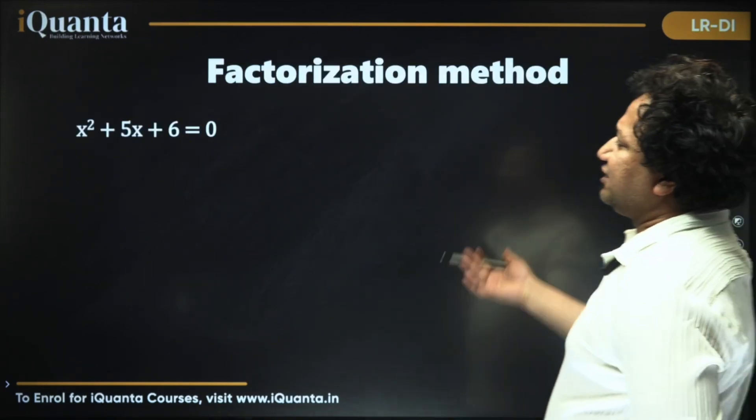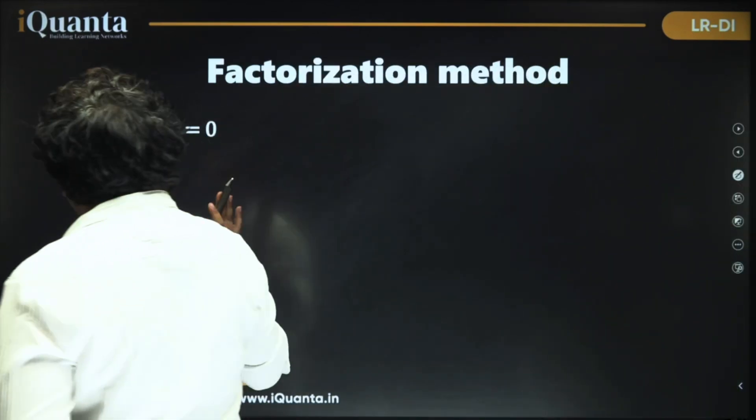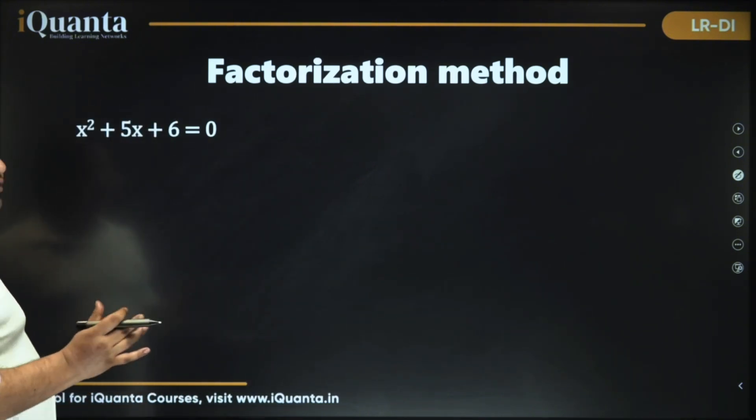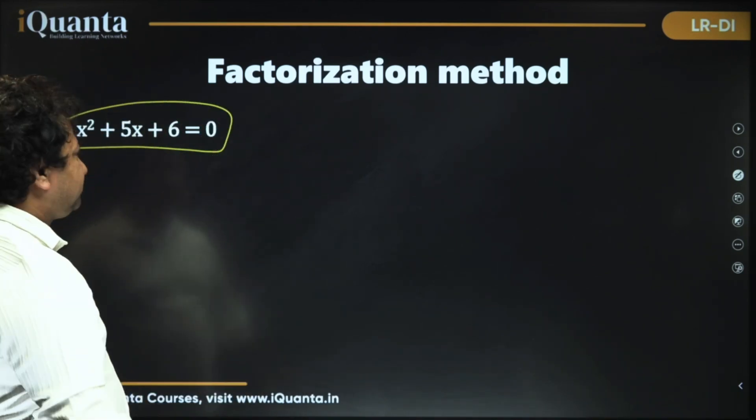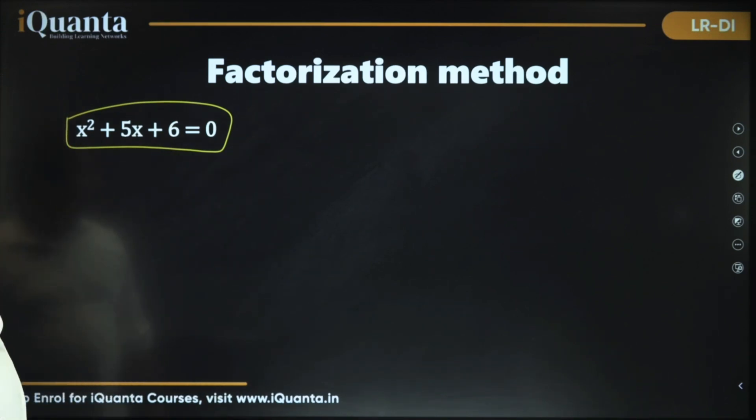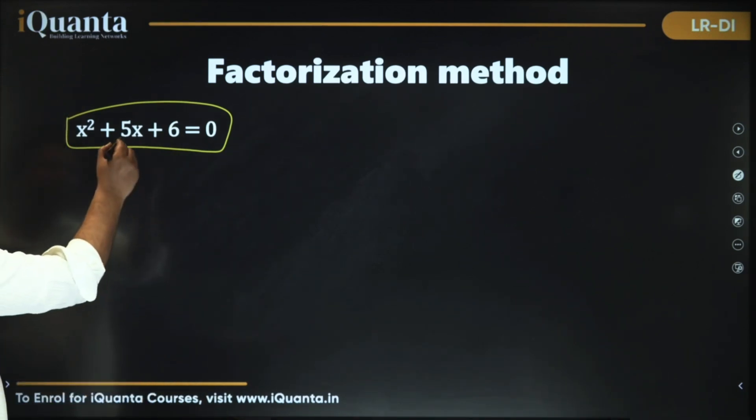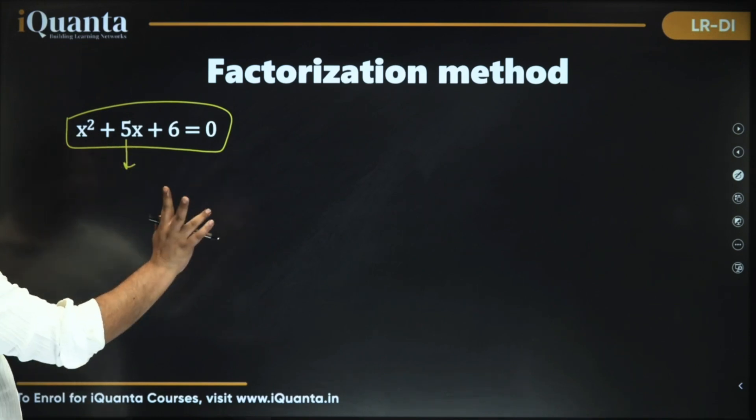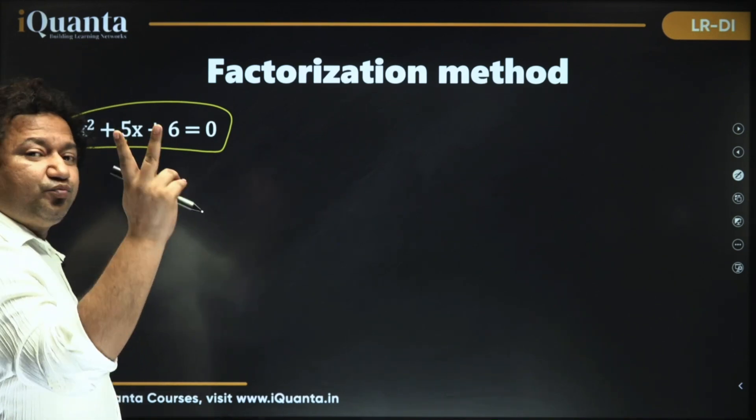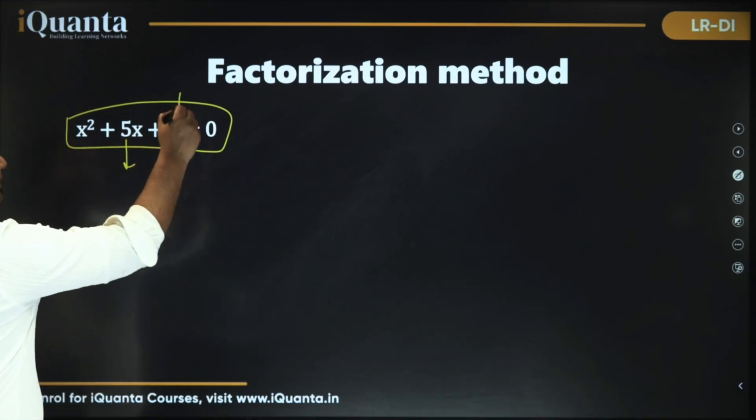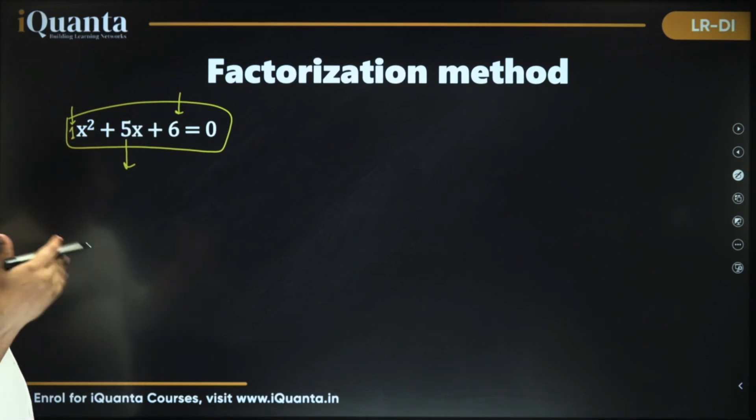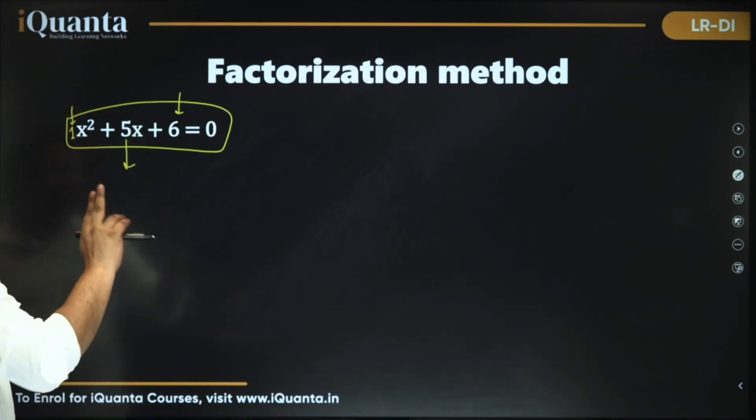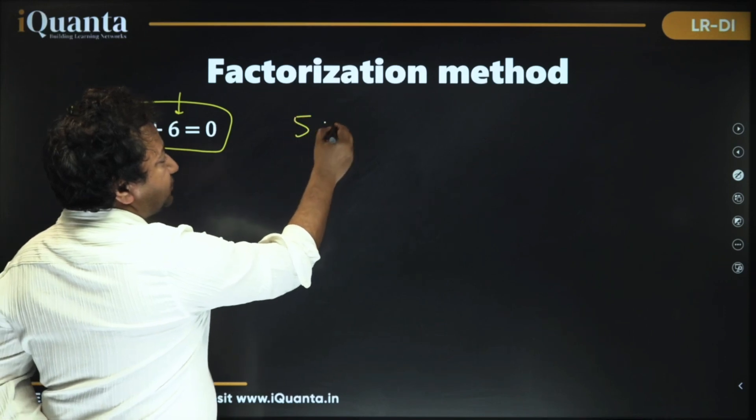First is factorization which we have done back in standard eight. So what we do here we try to make things common. This equation is made, there must be two roots. What those two roots are? How to do that? So I'll break the middle term in two parts and the product of those two parts must be equal to product of this constant term and the coefficient of x square. Here the coefficient of x square is 1. So 5 must be broken in two parts whose product is 6.